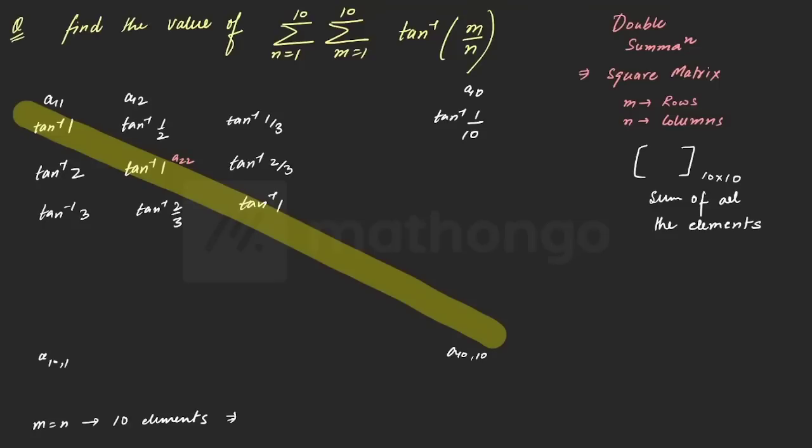So the answer, the sum will be 10 times tan inverse 1, which is nothing but 10 into π/4. So how many total elements were there? 10 into 10, 100 elements, of which we have identified 10 elements. How many are left? 10 is basically 10 times π/4. Now 90 elements are still left.